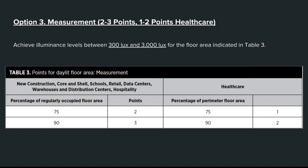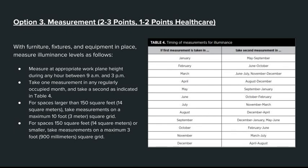Option three involves measuring the actual illuminance levels of a building instead of using computer simulation. You must achieve an illuminance level between 300 and 3,000 lux for the floor area to achieve the points as stated in table three. Once furniture, fixtures, and equipment are in place, measure illuminance levels as follows: measure at appropriate work plane height during any hour between 9 a.m. and 3 p.m., take one measurement in any regularly occupied month, and take a second as indicated in the table on the right.